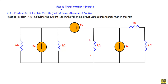In this video I will show you another example of source transformation theorem. The reference for the given circuit is 'Fundamentals of Electric Circuits,' third edition, by Alexander and Sadiku. This is practice problem 4.6: calculate the current i-naught from the given circuit using source transformation theorem. This is our given network; this is the seven ohm resistor, and the current flowing through it is i-naught.